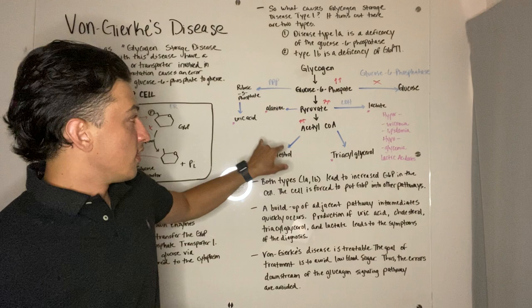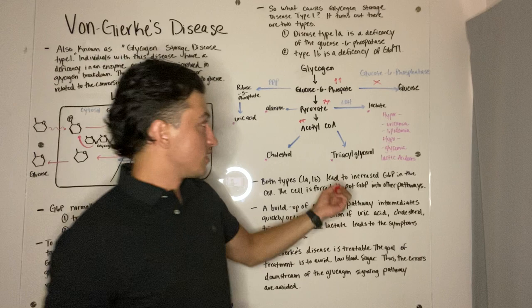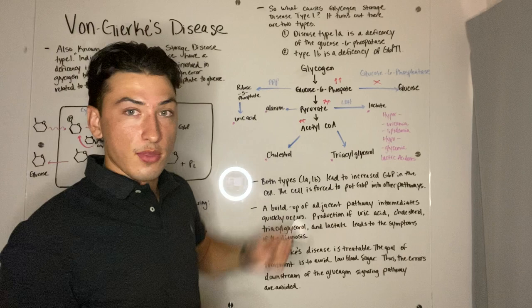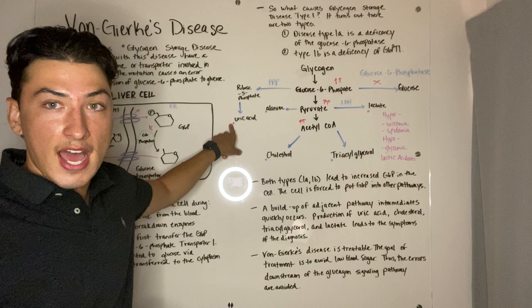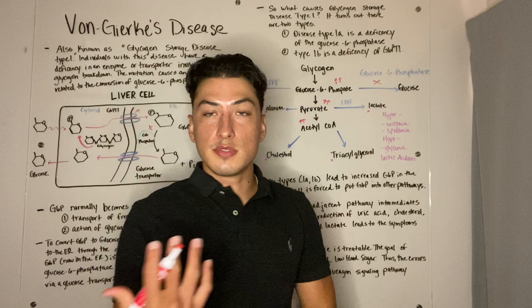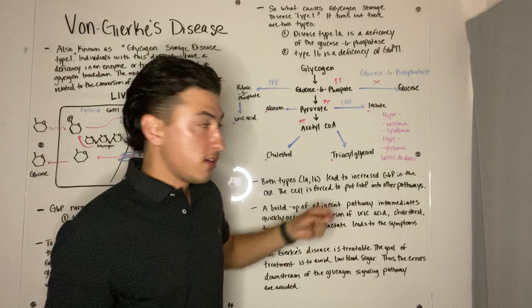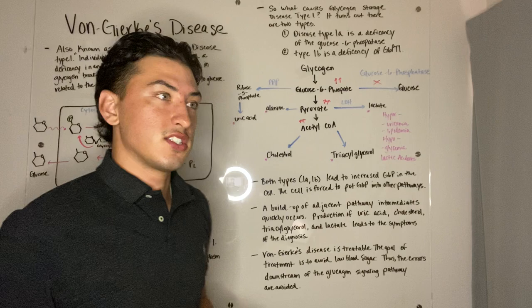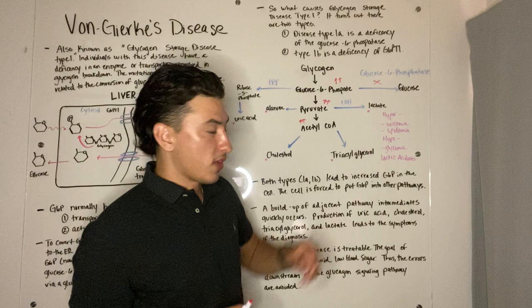The production of these intermediates — alanine, cholesterol, triglycerol, and lactate — will begin to present some of our symptoms. We also have glucose 6-phosphate undergoing the pentose phosphate pathway, where ribose 5-phosphate will be produced and then uric acid. Additionally, these processes produce symptoms such as hyperuricemia, hyperlipidemia, hypoglycemia, and lactic acidosis from our lactate. These symptoms will cause things such as a distended abdomen because of the enlarged size of the liver, and hypoglycemia can cause seizures in infants.